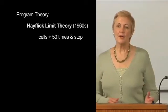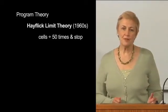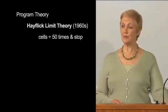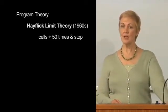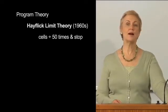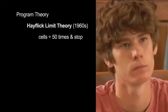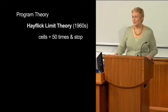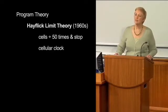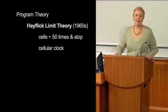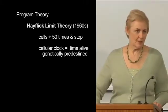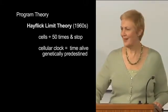In other words, after about 50 generations of cell division, which takes place over many years, the DNA just stops functioning. One interpretation of this is that a cellular clock is at work — that your time alive is genetically predestined. Now, this sounds like bad news, right?